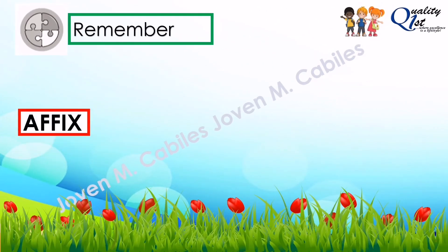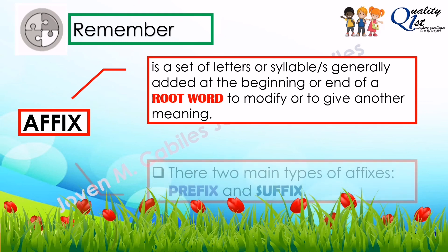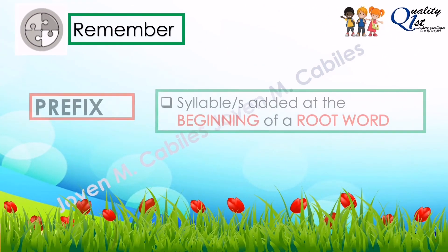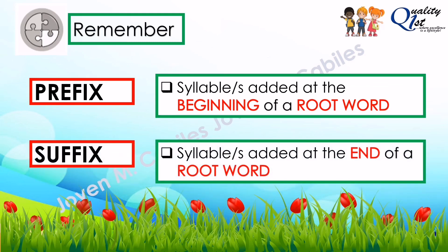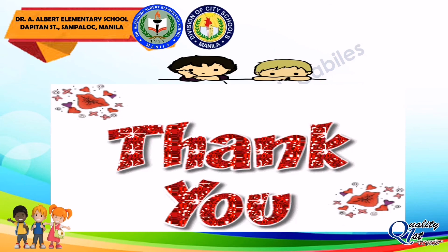Always remember, kids: an affix is a set of letters or syllable or syllables generally added at the beginning or end of a root word to modify its meaning. A prefix is added at the beginning of a root word. A suffix is a syllable or syllables added at the end of a root word. That's all for today, kids. I hope you enjoyed and learned our lesson. Goodbye!